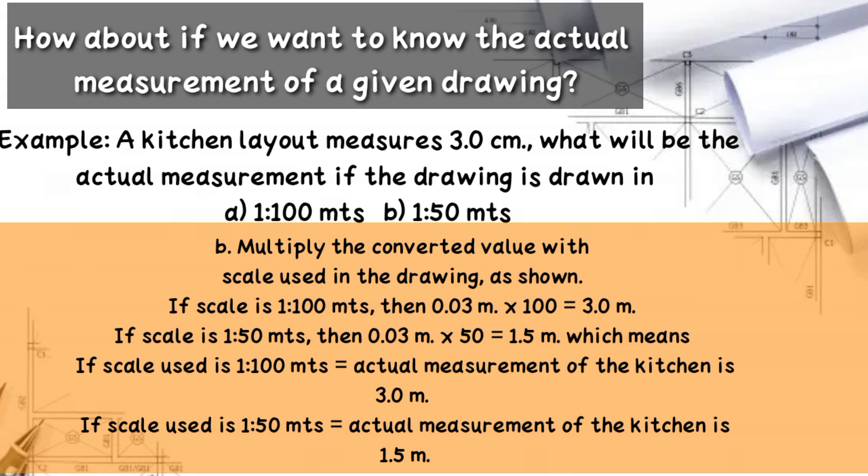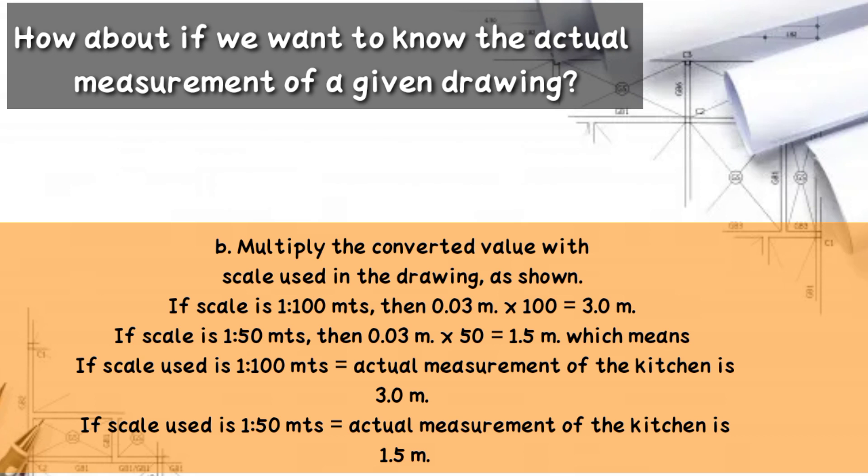If the scale is 1 to 50, then 0.03 m times 50 equals 1.5 m. Which means: if the scale used is 1 to 100, the actual measurement of the kitchen is 3 m. If the scale used is 1 to 50, the actual measurement of the kitchen is 1.5 m.